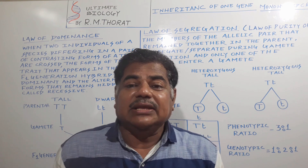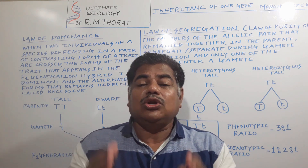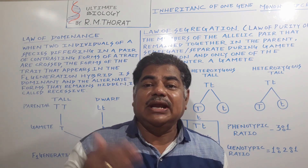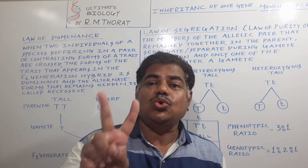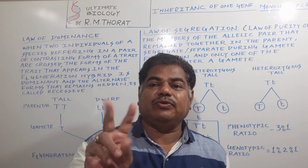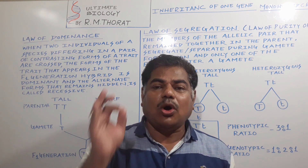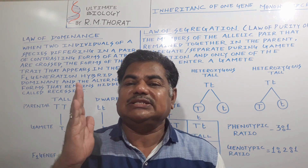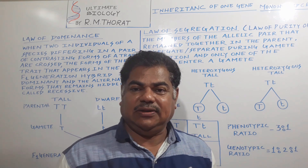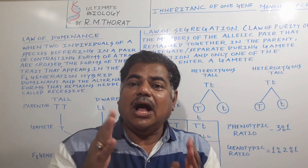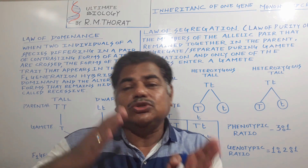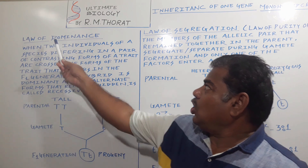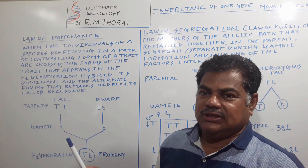Mendel carried out a monohybrid cross and discovered two laws: one is the law of dominance and the second one is the law of segregation. We have already seen the law of dominance.